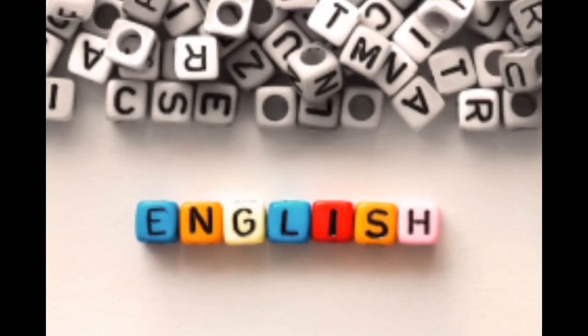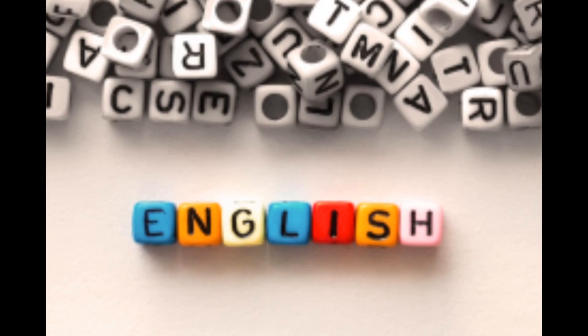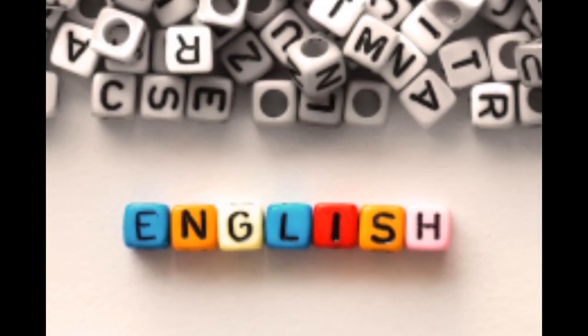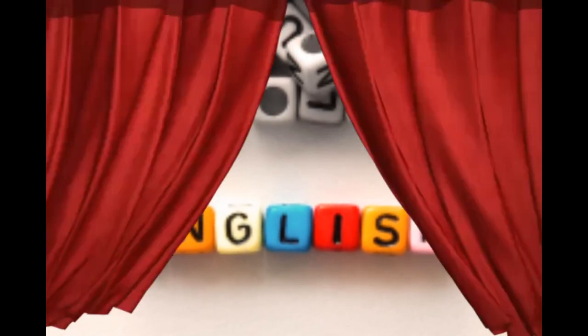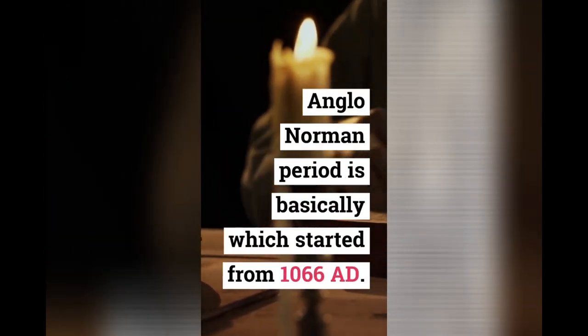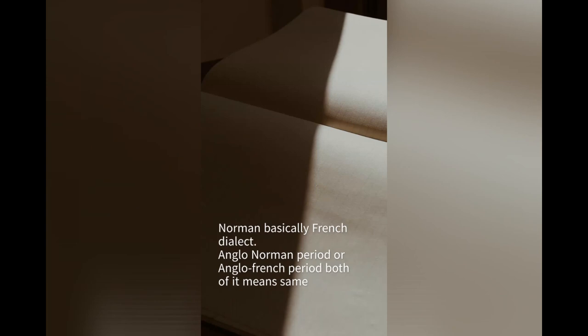Today in this video lecture I am going to talk about the Anglo-Norman period, or Middle English period. The Anglo-Norman period started from 1066 AD. Norman is basically a French dialect, so you can say that it is the Anglo-Norman period or Anglo-French period — both mean the same thing.